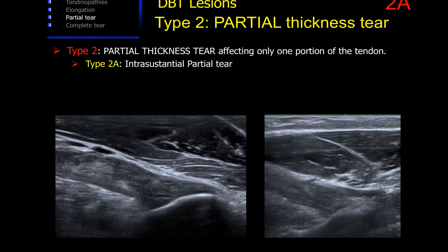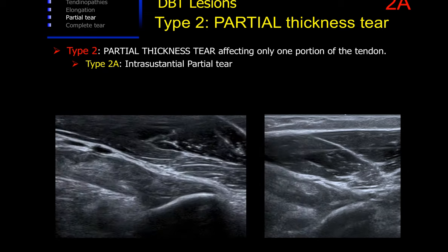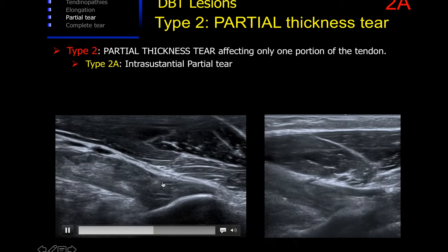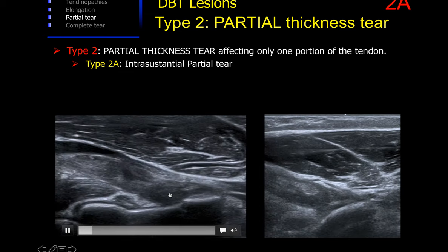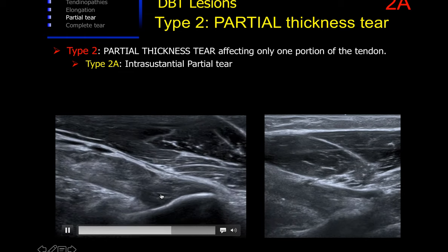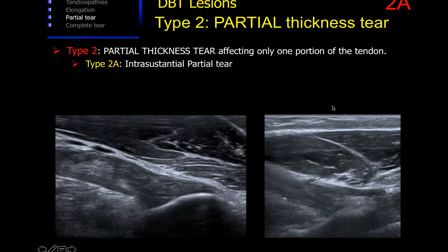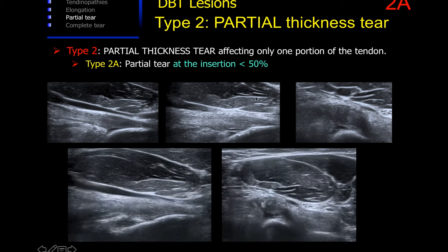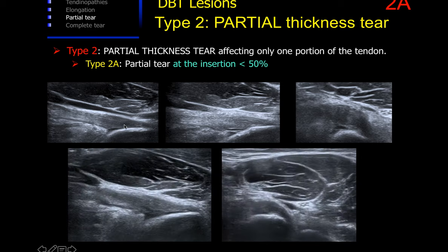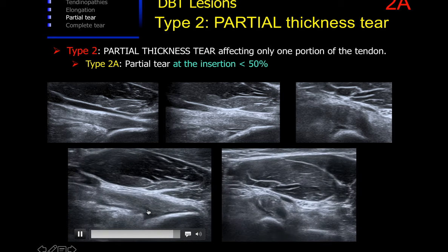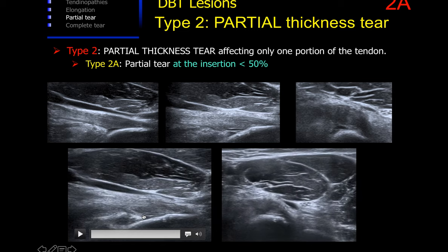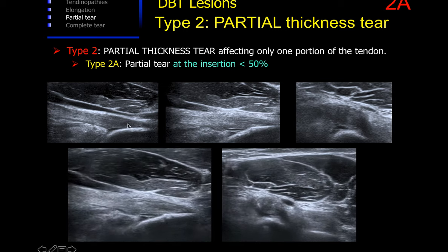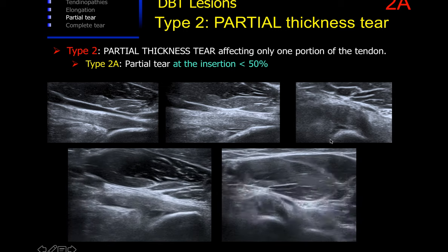We have classified as Type 2a lesions the partial thickness tears that do not affect the total width of the tendon — in this case, intratendinous partial tears that do not affect clearly the insertion. We see holes left inside the tendon while the insertion remains in place. More often, in cases of Type 2a lesions, we see tears affecting the insertion but less than 50% of the entire insertion at the radial tuberosity. We can see the cleft, the rupture at the insertion, but more than 50% of the tendon remaining.